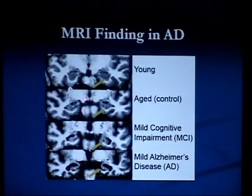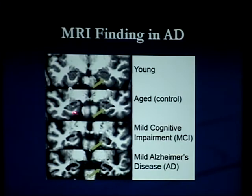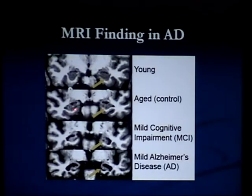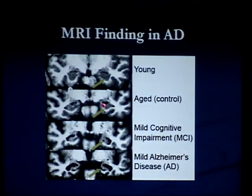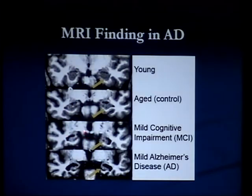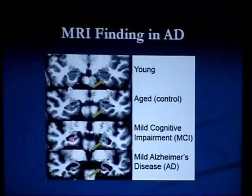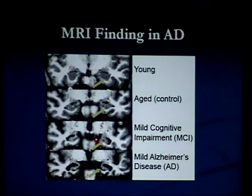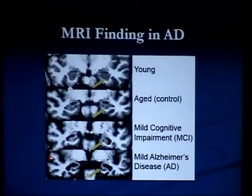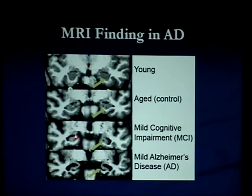And as we get older, we all lose some brain volume — so this is probably my scan here — it's losing some memory centers. And then there's something that's more than normal age-related changes. We call that mild cognitive impairment, which may be a precursor to Alzheimer's disease.